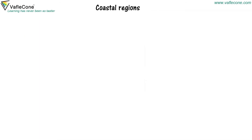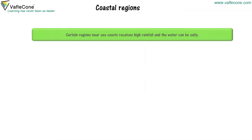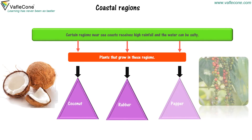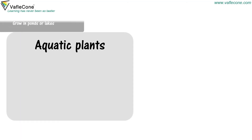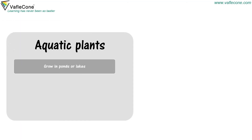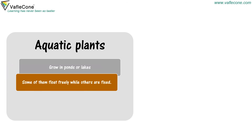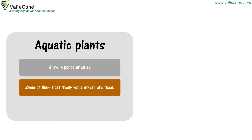Certain coastal regions near the sea receive high rainfall and the water can be salty. Plants that grow in these regions include coconut, rubber and pepper.